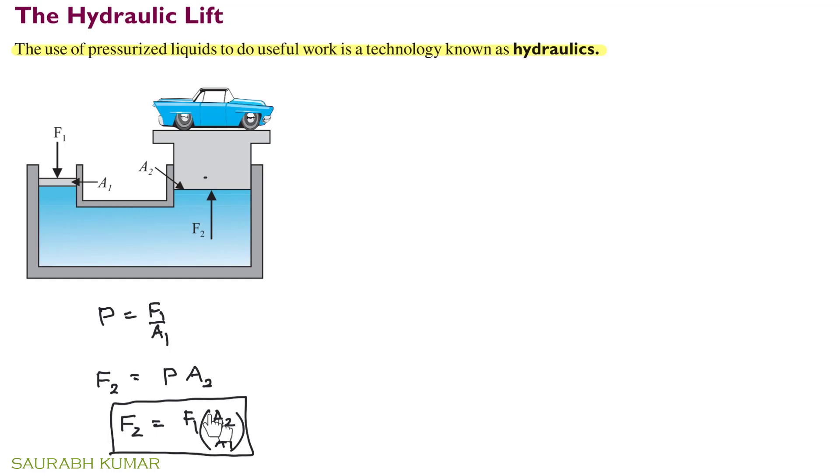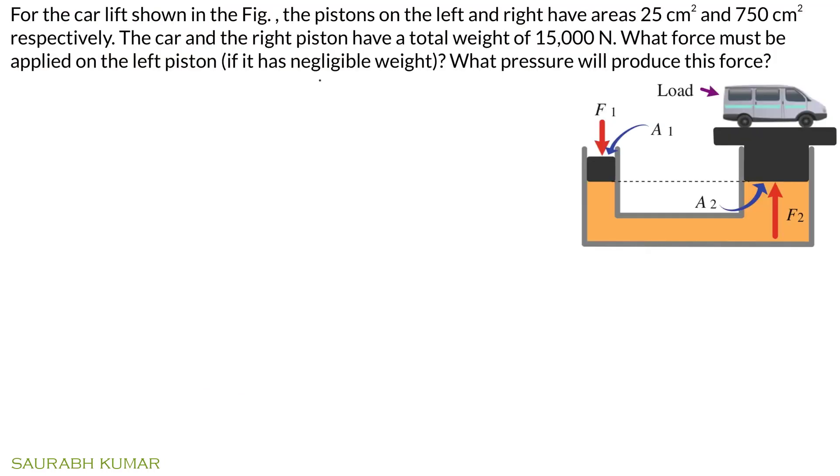First question: For the car lift shown in the figure, the pistons on the left and right have areas of 25 cm² and 750 cm² respectively. The car and the right piston have a total weight of 15,000 Newtons. What force must be applied on the left piston if it has negligible weight? What pressure will produce this force?